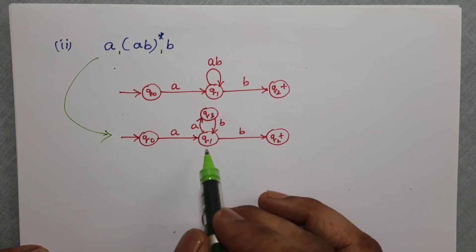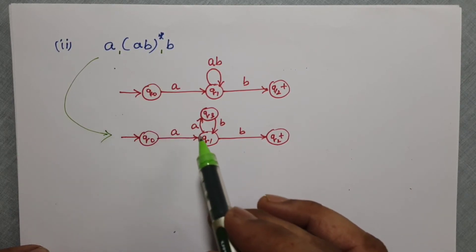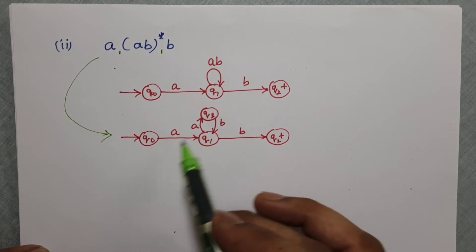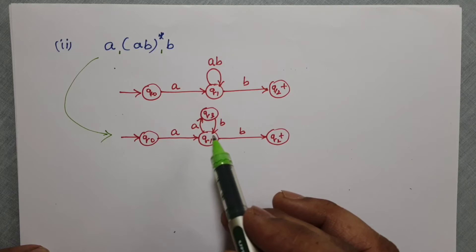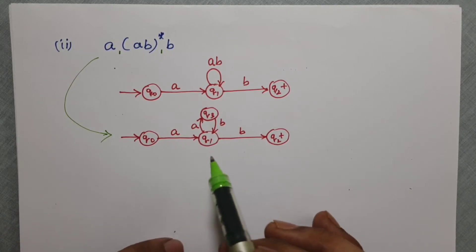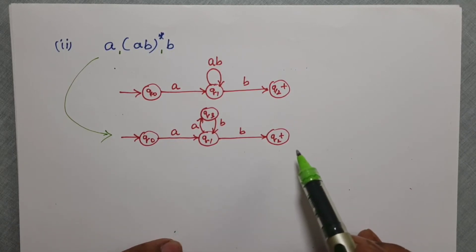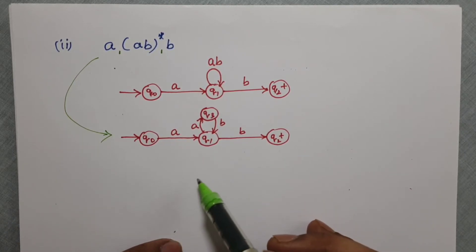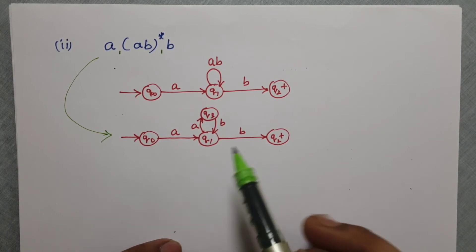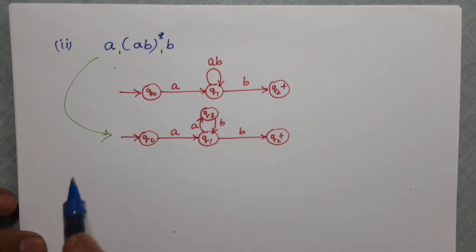This AB is now split into A and B by inserting a state in between, giving us the finite automata for the given regular expression. This is clearly a DFA. We can make it a complete DFA by adding a dead state, which you can practice yourself.